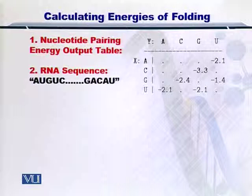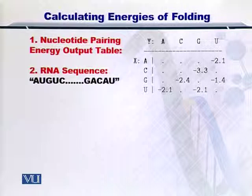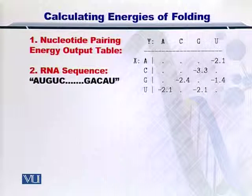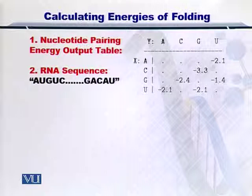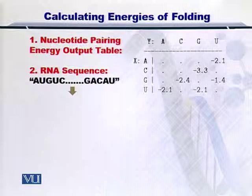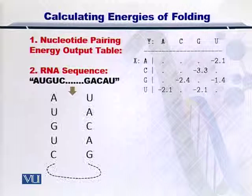As you can see, the A, U, G, U, C portion is the 5' end, and G, A, C, A, U is the 3' end. Let's see what happens when this molecule folds.